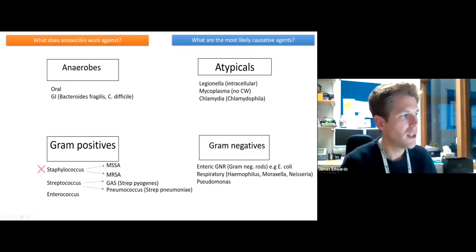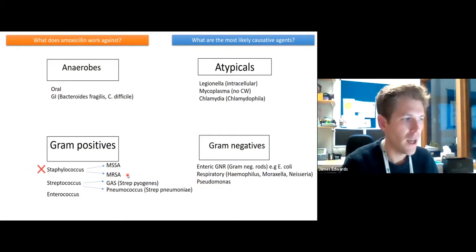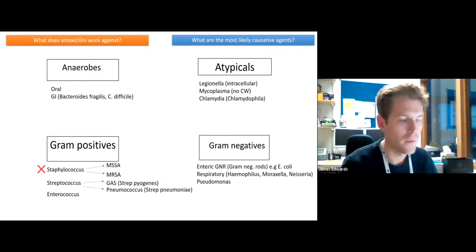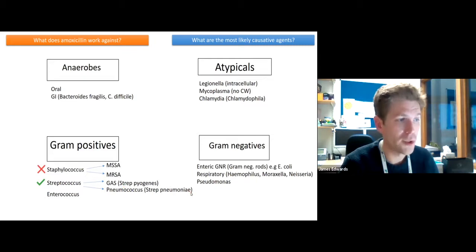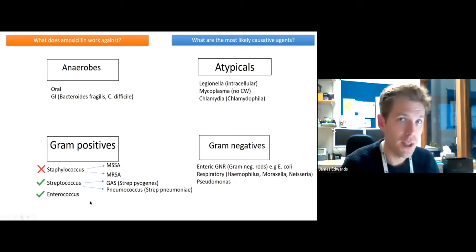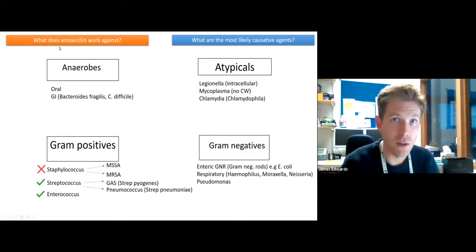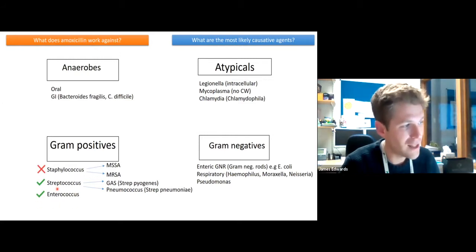Starting with the gram positives: amoxicillin doesn't work particularly well against Staphylococcus — both MSSA and MRSA — because staph produces a beta-lactamase, an enzyme that deactivates amoxicillin. It does work against Streptococcus, both Group A strep and pneumococcus. This is important because pneumococcus is a key cause of upper respiratory tract infections. It also works against Enterococcus, which is relevant because giving it orally means the drug acts against other bacteria including enteric organisms — which can explain why some people report GI upset such as diarrhoea.